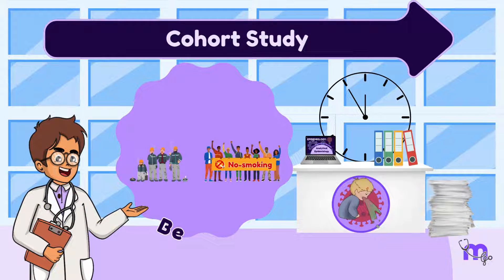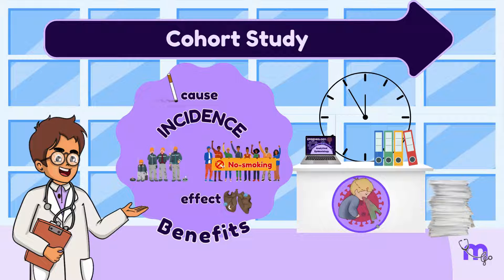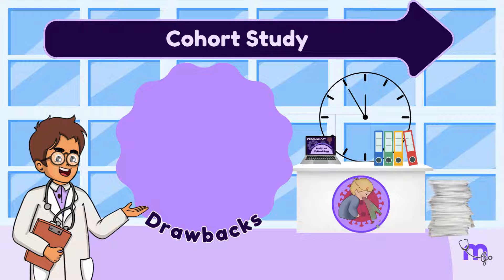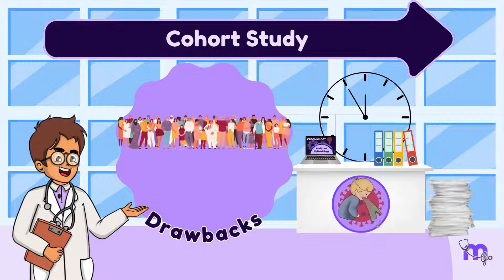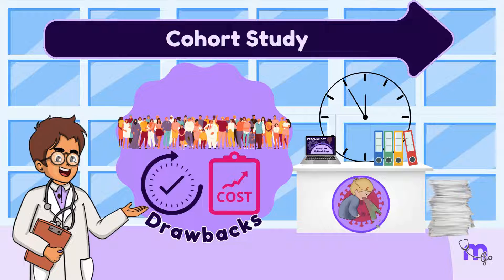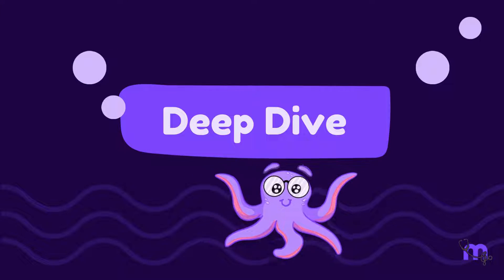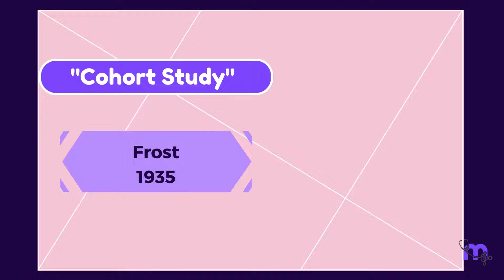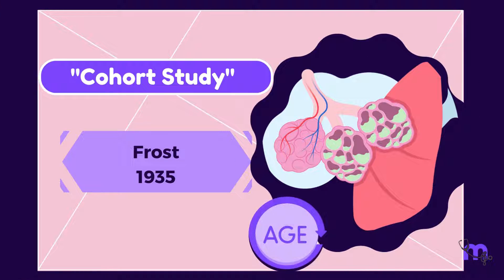Cohort studies are very beneficial because they help me calculate the incidence and conclude the cause and effect relationship. However, they also have certain drawbacks: they require a large population, are time-consuming, and are expensive. The term cohort study was first used in 1935 by Frost to describe studies that compared the incidence of tuberculosis by age and sex.